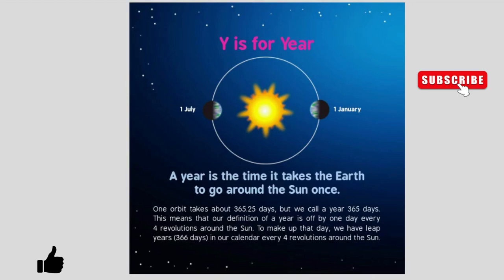Y is for Year. A year is the time it takes the Earth to go around the Sun once. One orbit takes about 365.25 days, but we call a year 365 days. This means that our definition of a year is off by one day every four revolutions around the Sun. To make up that day, we have leap years with 366 days in our calendar year every four years.